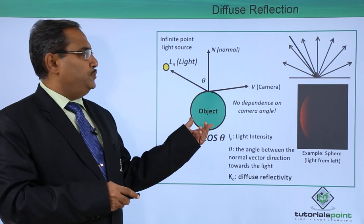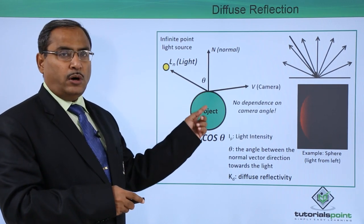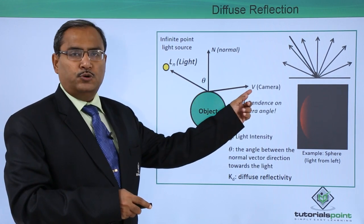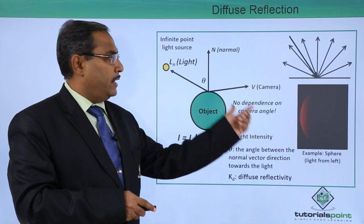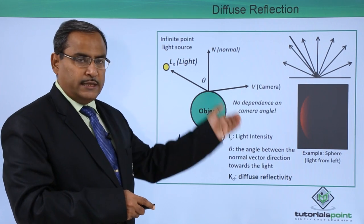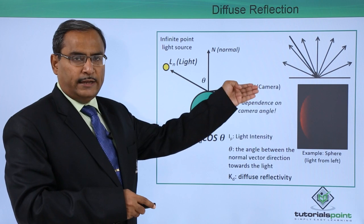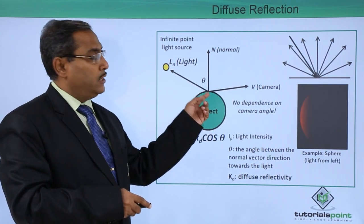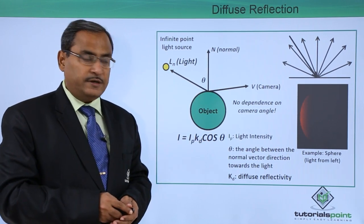Consider this object, our light source, and the normal to the object surface. This is the angle theta, and here we have placed our camera. In case of diffuse reflection, there is no dependence on the camera angle — it does not matter from where we are looking at this particular point on the object. This is the basic theme behind diffuse reflection.